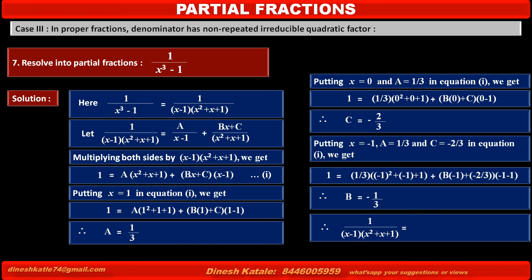Therefore, the given fraction 1 upon (x minus 1)(x squared plus x plus 1) equals (1/3) upon (x minus 1) plus (minus 1/3 x minus 2/3) upon (x squared plus x plus 1).